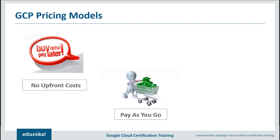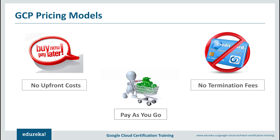With AWS, if you use a service for 20 minutes, you get charged for one complete hour. GCP is different — it charges on a per-second basis. So if you are using a service for just a minute or two, you will be charged only for that time and nothing else. It is literally pay as you go in the real sense.